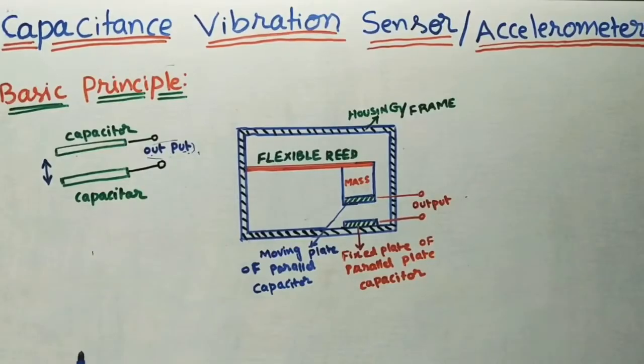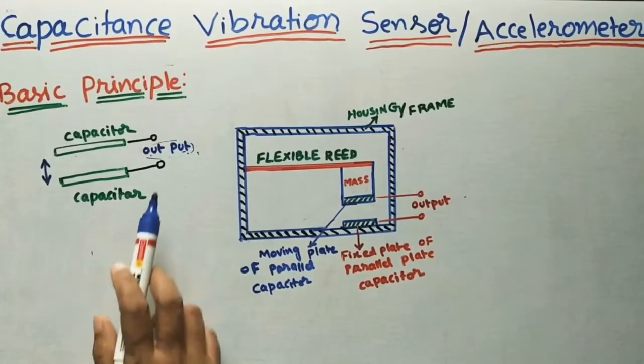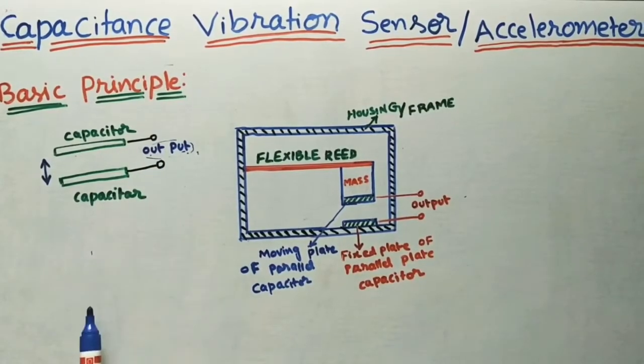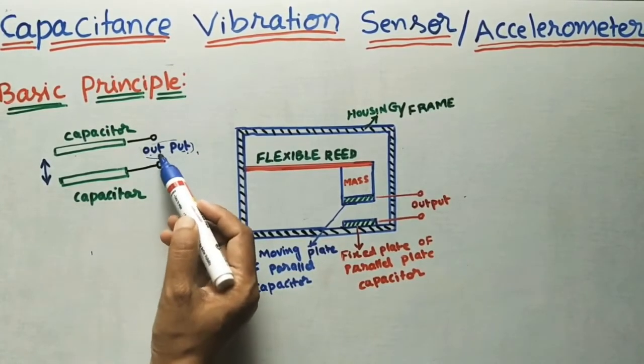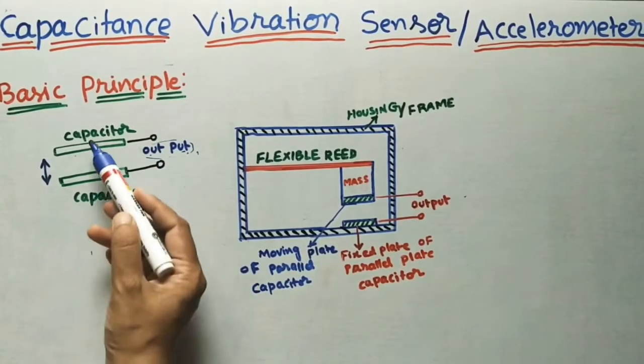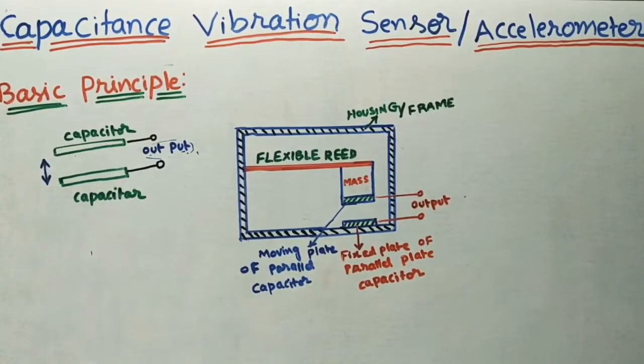At the output we can see the capacitance — how much change in capacitance in terms of voltage. We can connect a voltmeter here to measure the change in capacitance.